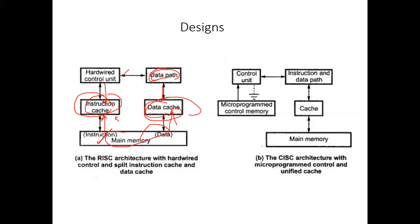In the CISC architecture, there is a micro-programmed control unit with a unified cache — meaning the cache holds a combination of both instructions and data. There is also control memory, and execution is performed on the control unit using the micro-programmed control memory.